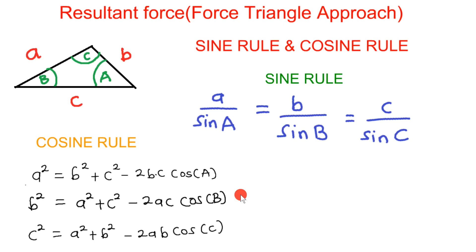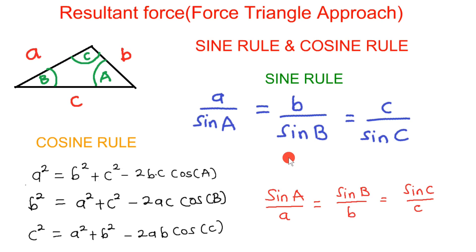One thing about the sine rule is that if you want to calculate for a side, use the formula with the sides as the numerator and the sine of the angles as the denominator. If you want to calculate for an angle, use the reverse form of the formula where the sine of the angles is the numerator and the sides are the denominator.